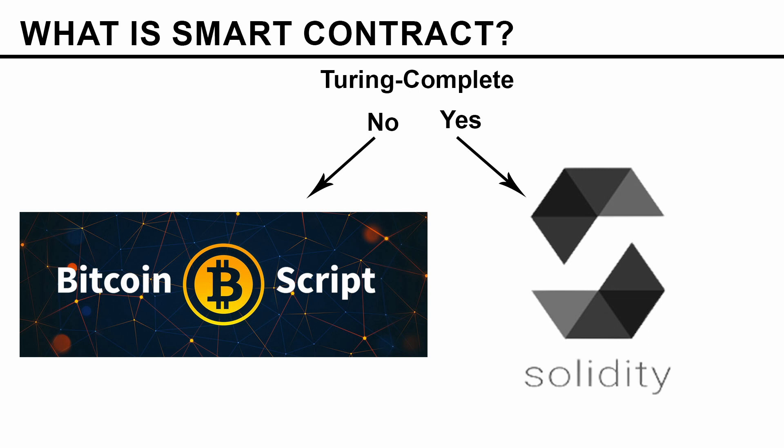How long it will take that code to run is a different question — it may take minutes, days, weeks, or even years — but that does not matter. It's about the conceptual notion that you can actually code it; the language has all the required elements to facilitate that logic. Why is Bitcoin Script not Turing complete while Solidity is? Because in Bitcoin Script there is one missing and very important component called loops.